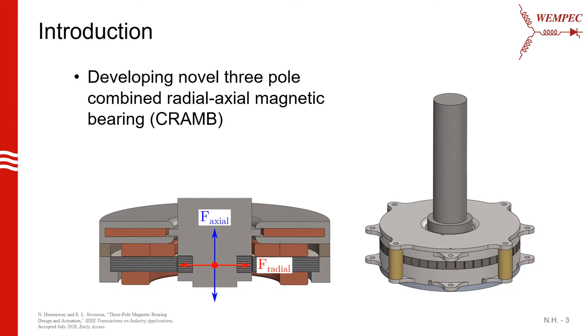This research can largely be split up into two main thrusts. One of them is developing this prototype shown here on these slides. This is a combined radial axial magnetic bearing that can produce both radial and axial forces, and we're going to be using this prototype in conjunction with a bearingless motor that other students are developing in our lab.